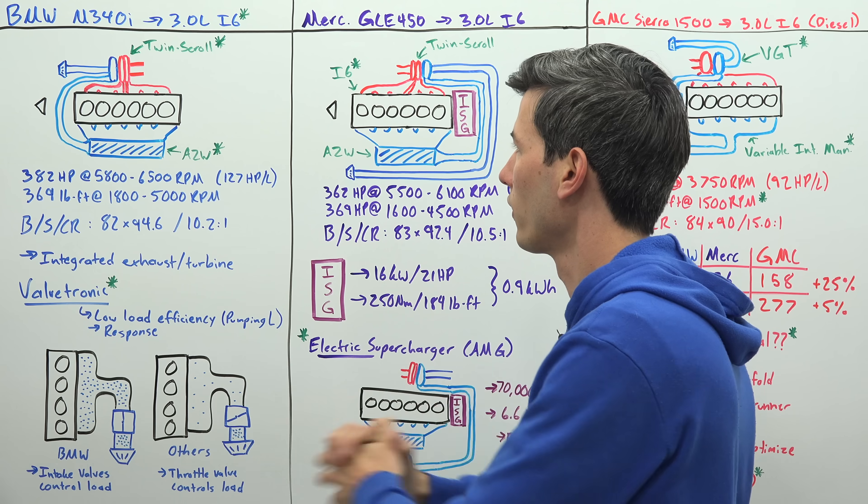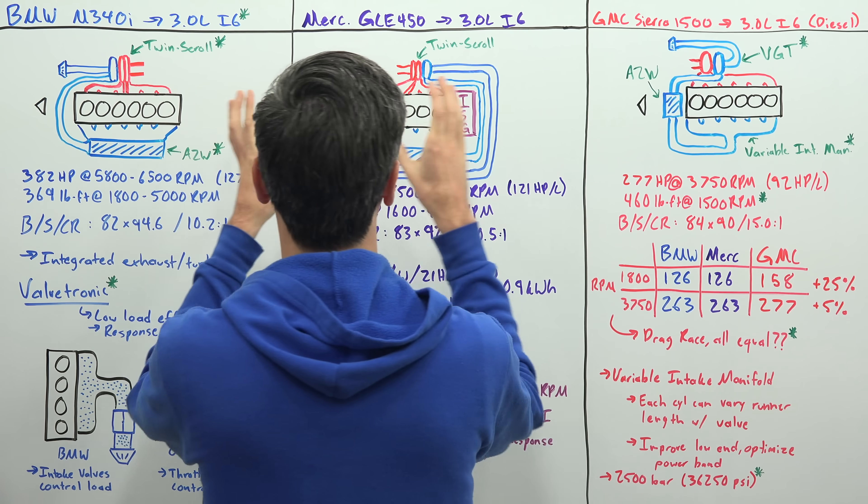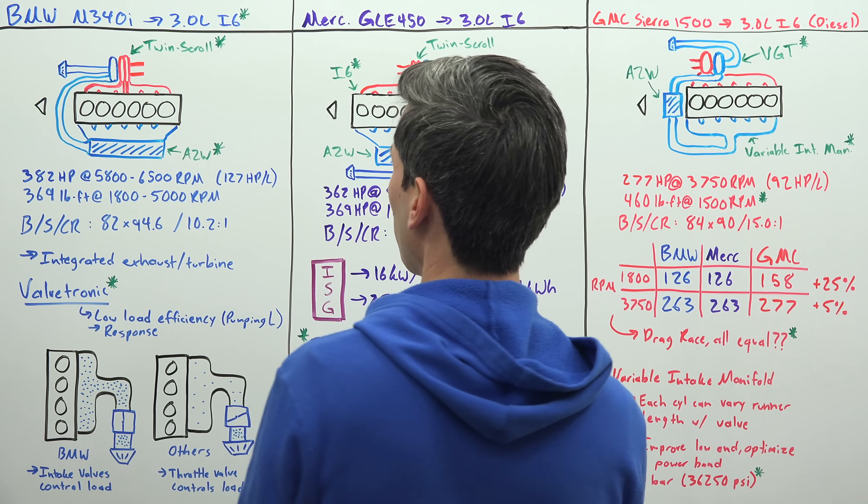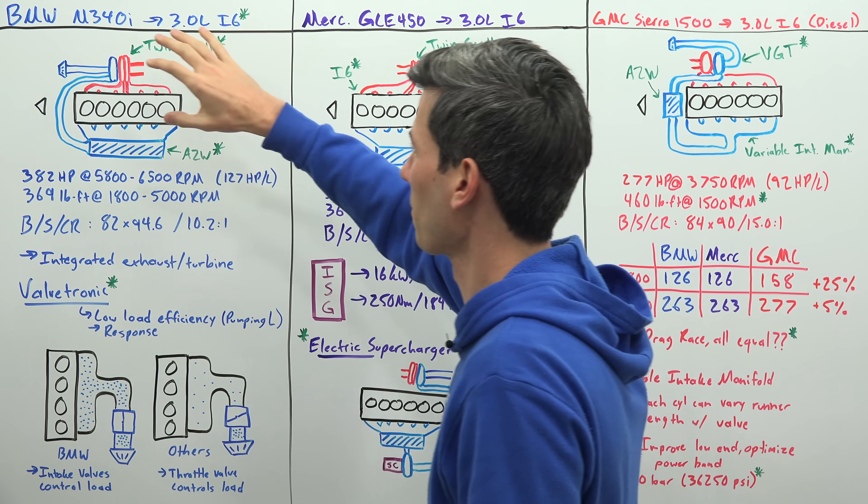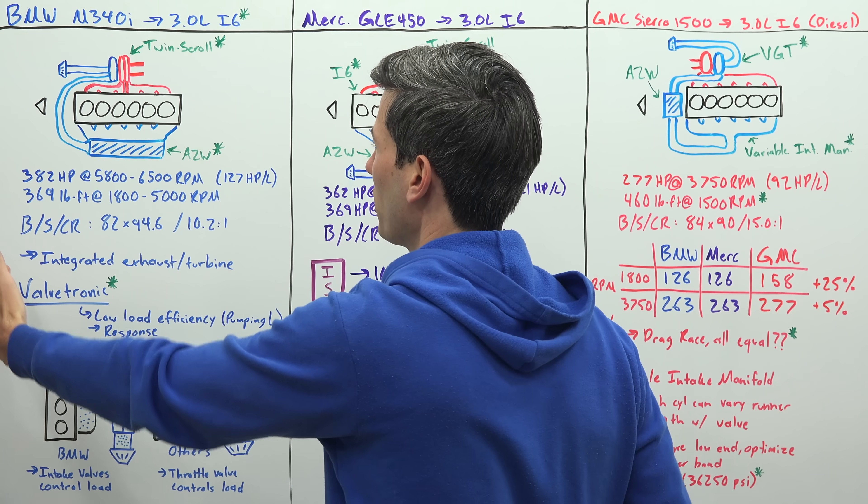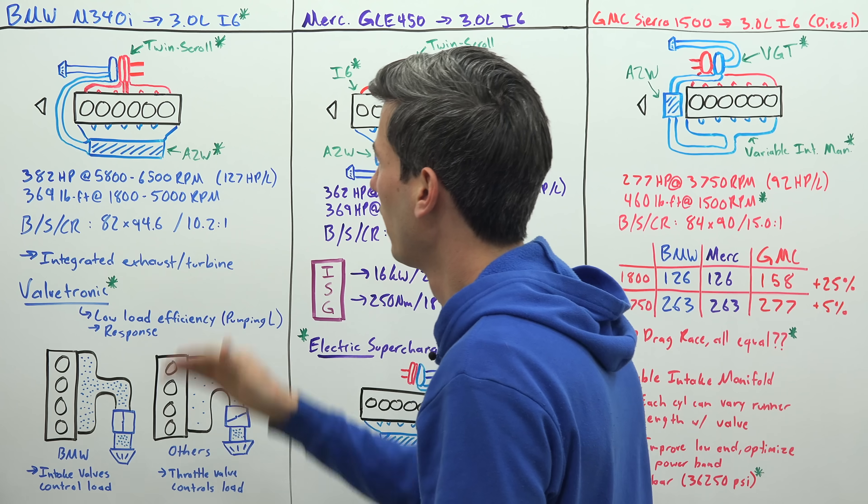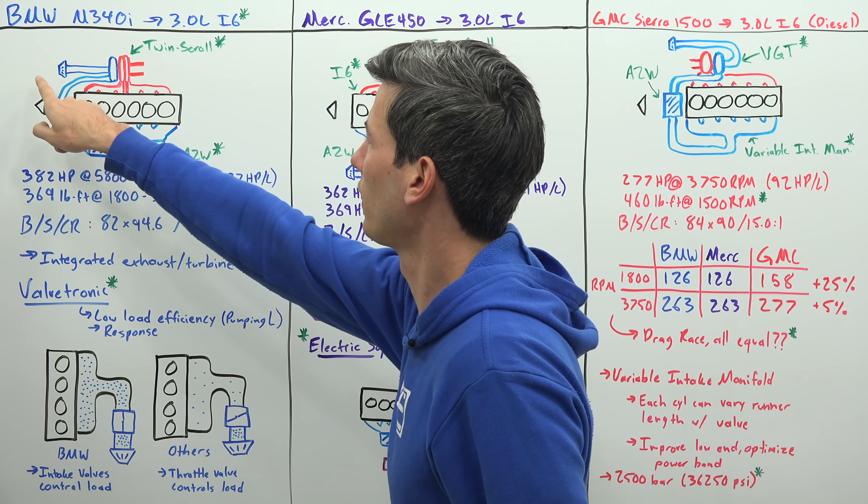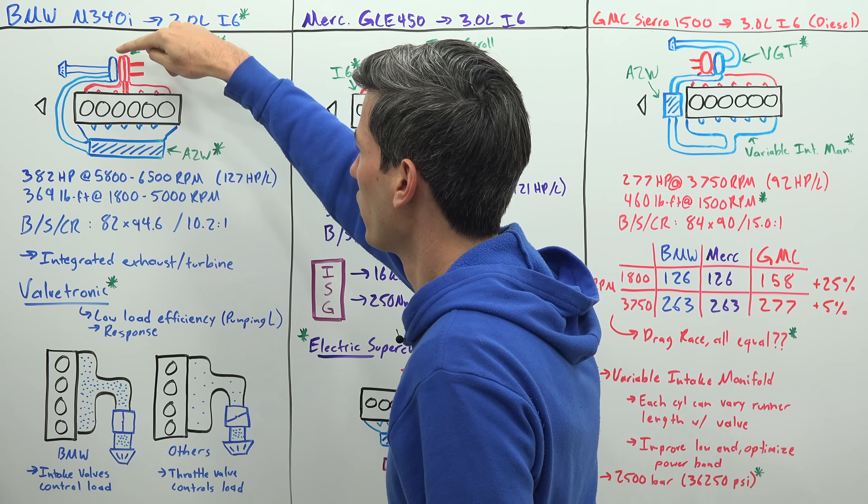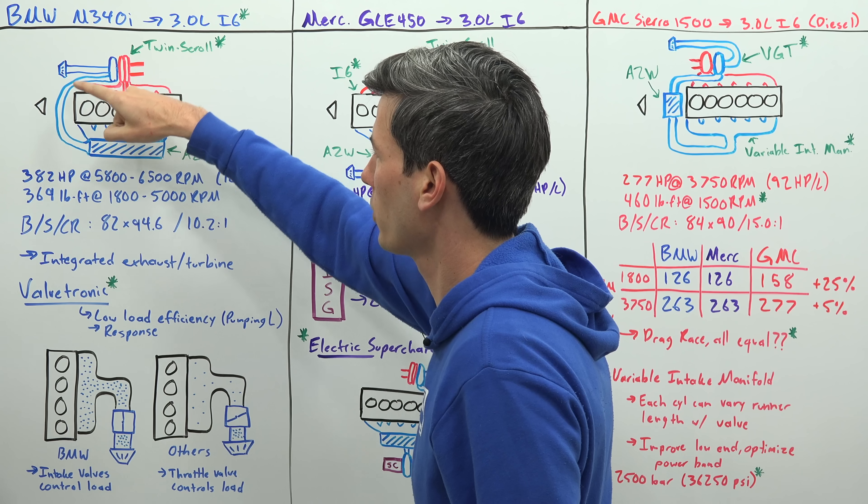I've drawn a simplified diagram of each engine here. Just looking at the BMW engine, the left side of the board is going to be the front of our engines or the front of the car, a longitudinally placed engine here. You can see the air comes in through the intake, travels through the compressor side of the turbocharger.